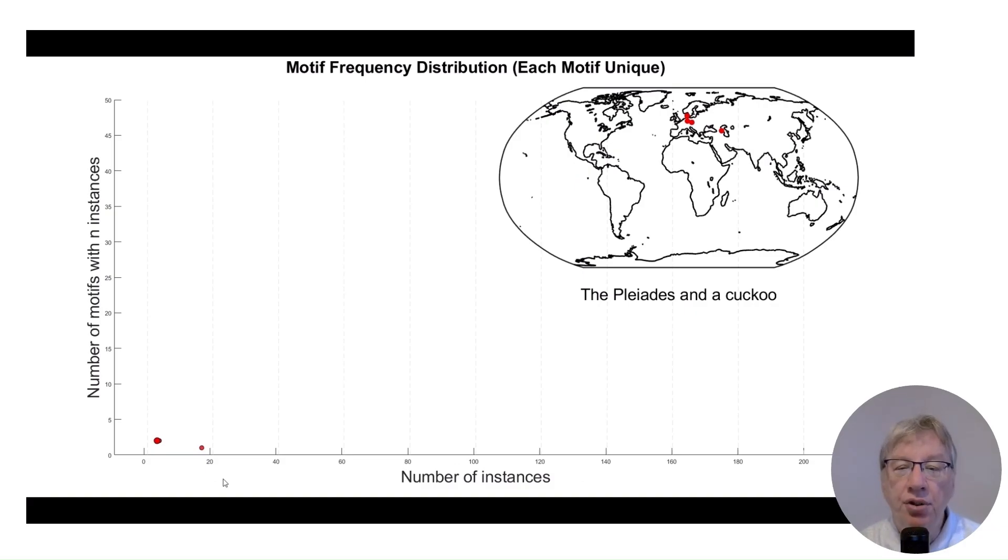I have already mentioned Yuri Berezkin's database. Elements in the database have been largely compiled over the past two centuries. They provide a snapshot of the global distribution of myth motifs. One observes that many motifs appear in few traditions and a few motifs are found in many traditions.